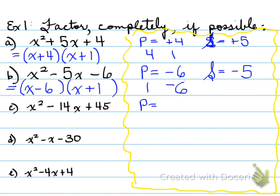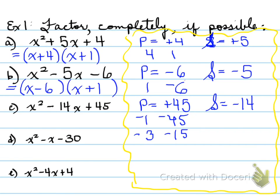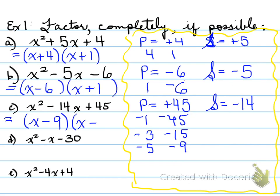x squared minus 14x plus 45. Product is 45, sum is negative 14. What two numbers multiply to give us 45 and add to give us negative 14? They're both going to be negative. Negative 1 and negative 45 will not result in negative 14. Negative 3 and negative 15 does not give us negative 14. Negative 5 and negative 9 — when I add those, that will give us negative 14. So the factors are x minus 9 and x minus 5. You could have had these reversed and that's okay too.